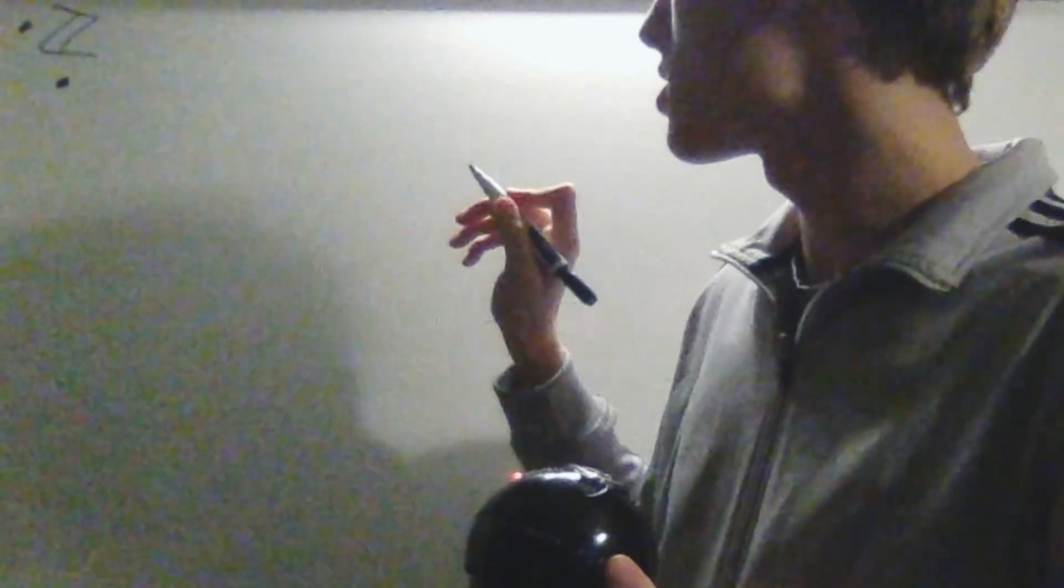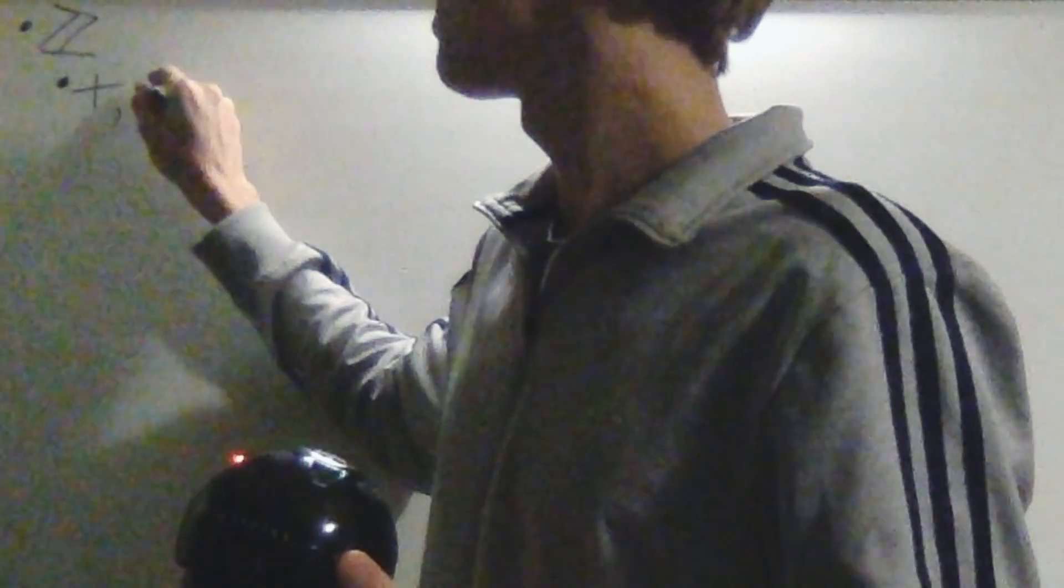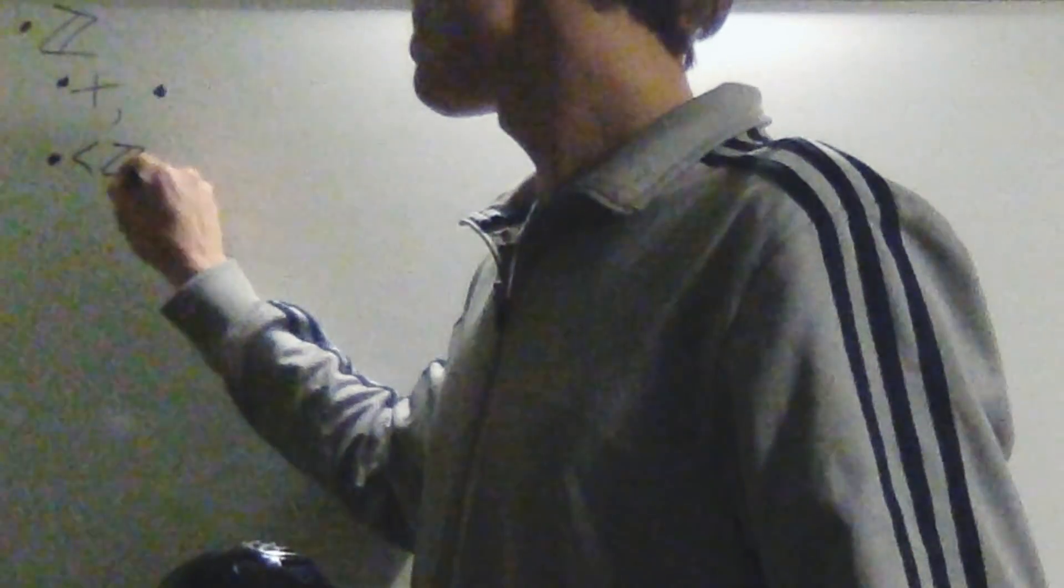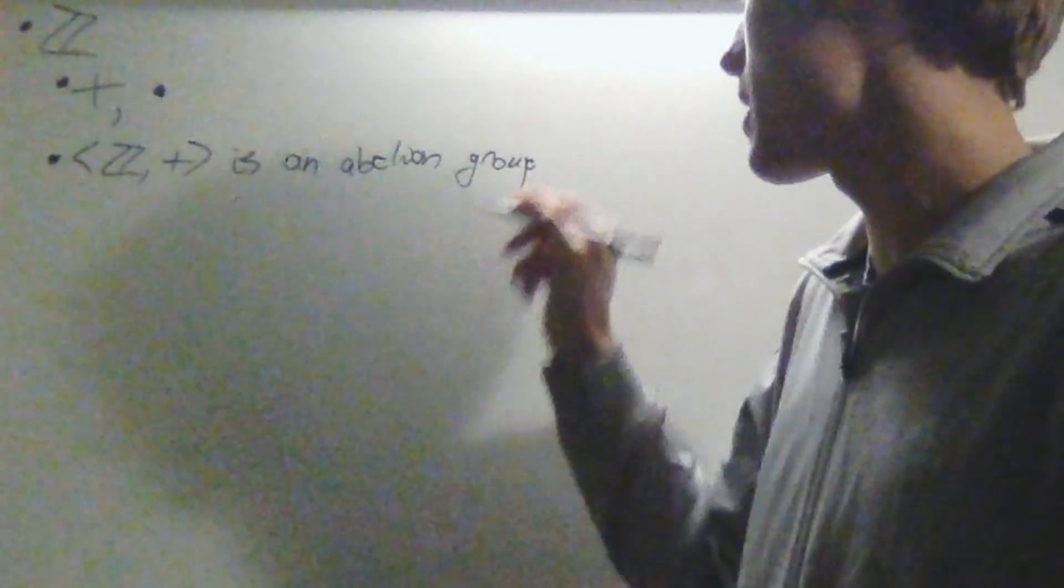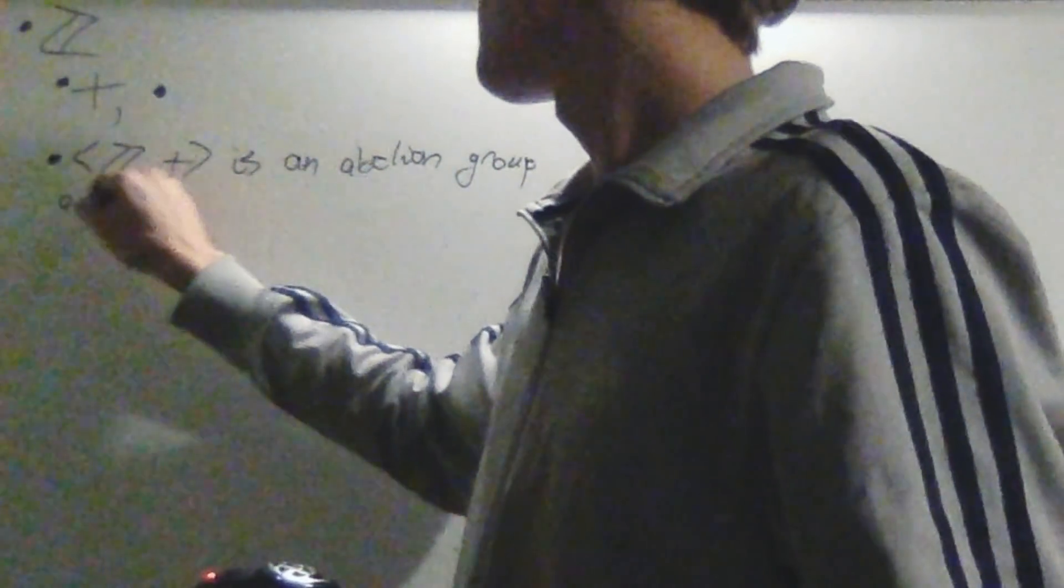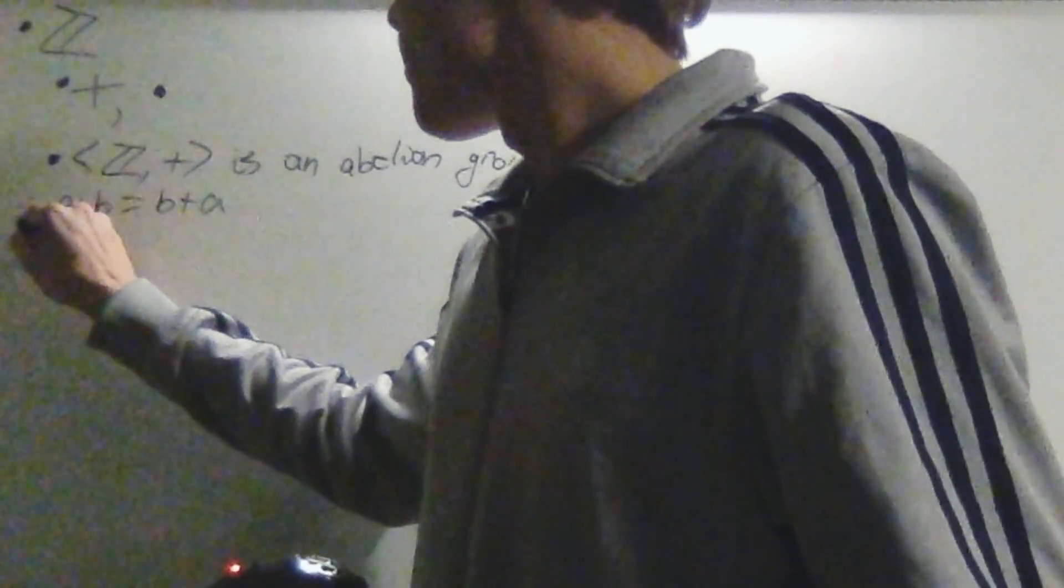Why are they based around the integers? Well, the integers have two operations, plus and multiply, and these two operations have special properties that you should probably keep an eye on. Z under addition is an abelian group, and by abelian, I mean a plus b equals b plus a for all a and b.